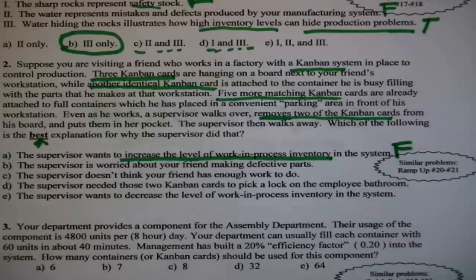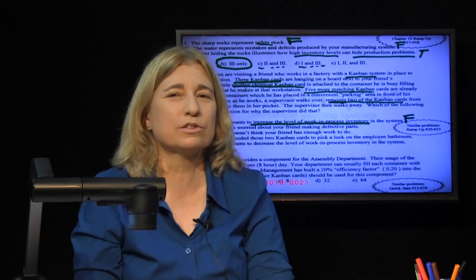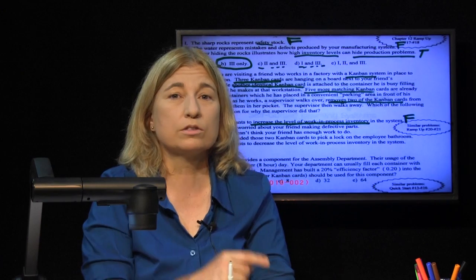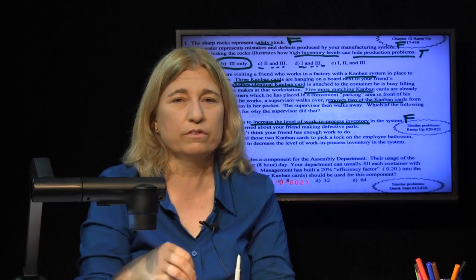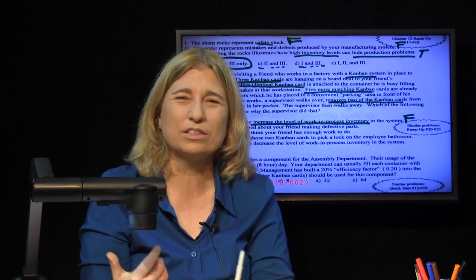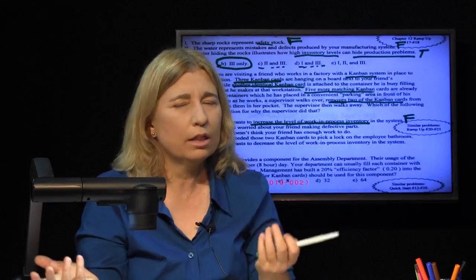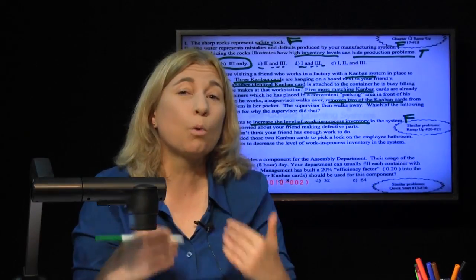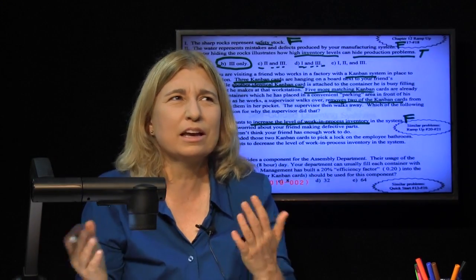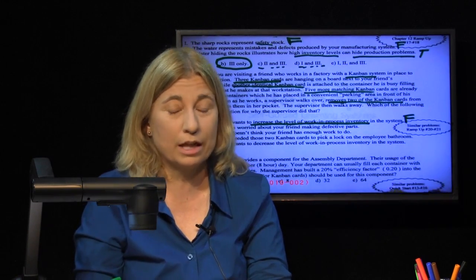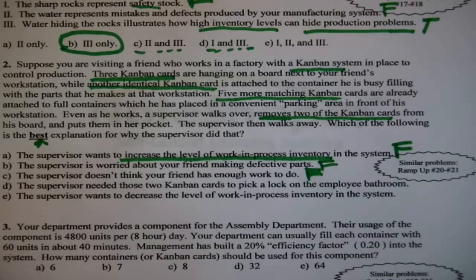The supervisor wants to increase the level of work-in-process inventory in the system — that is false, because the number of Kanban cards controls the level of inventory. More Kanban cards means more inventory — it's like permission for inventory to exist — and fewer cards means less inventory. She took two away, so she took away permission for inventory to exist. That top option doesn't make sense. The supervisor is worried about your friend making defective parts — that might be true, but it doesn't explain why she took away two cards. There are better and more direct ways to address that, so we kick it out.